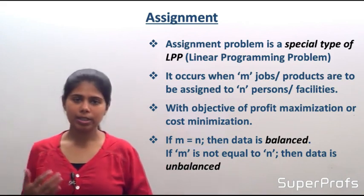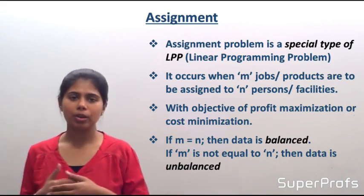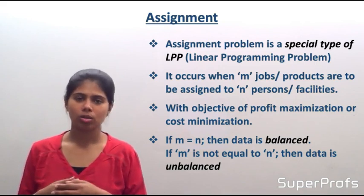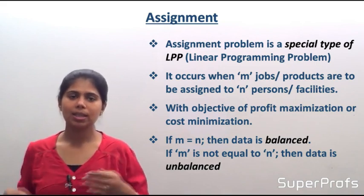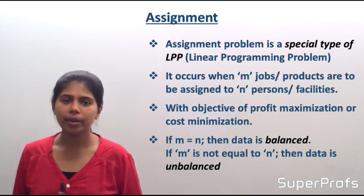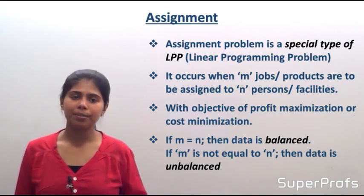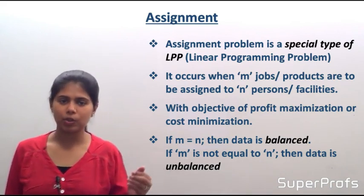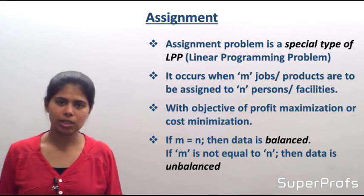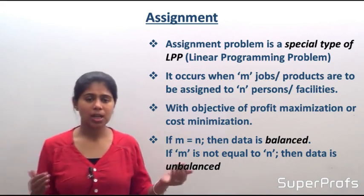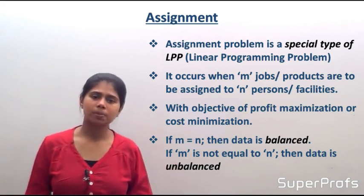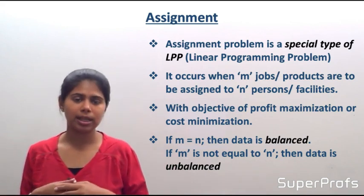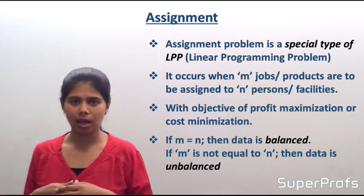Another important concept is whether the data is balanced or not. We say that the data is balanced if M is equal to N — where M is the products or jobs and N is the persons or facilities. If both are equal, the data is balanced. If they are not equal, the data is known as unbalanced.